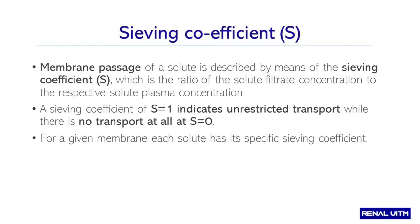What is the sieving coefficient? The permeability or membrane passage of a solute is described by the sieving coefficient, which is the ratio of the solute filtrate concentration to the respective solute plasma concentration. A sieving coefficient of one indicates free passage — essentially all filtrated. A sieving coefficient of zero means the solute cannot pass the membrane. For a given membrane, each solute has its specific sieving coefficient.